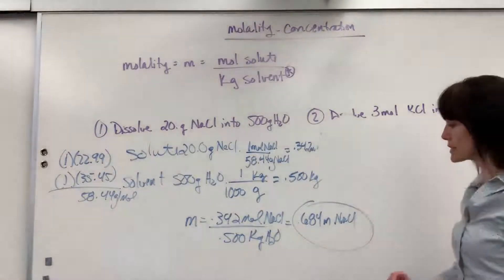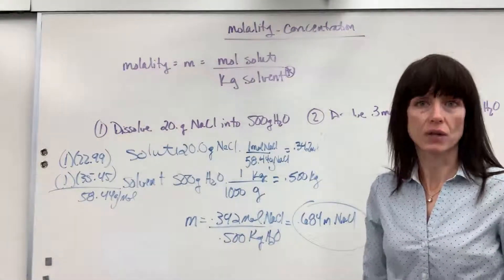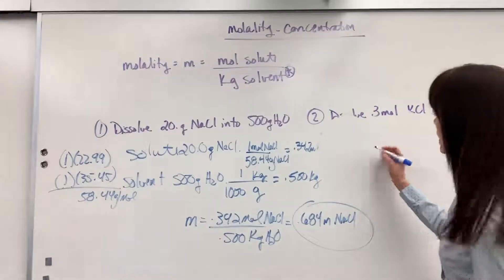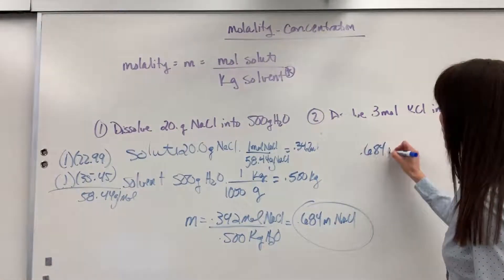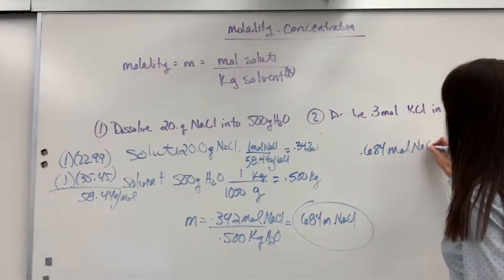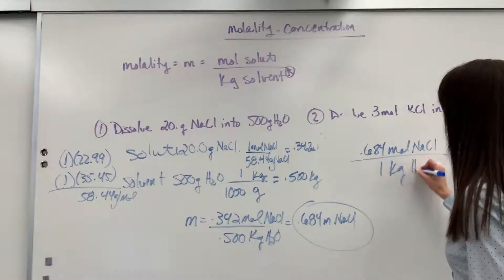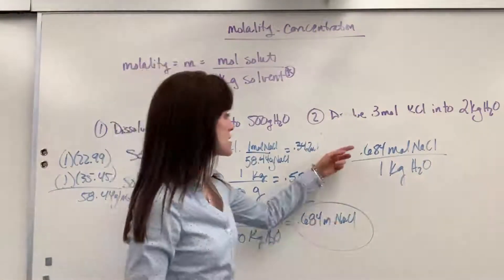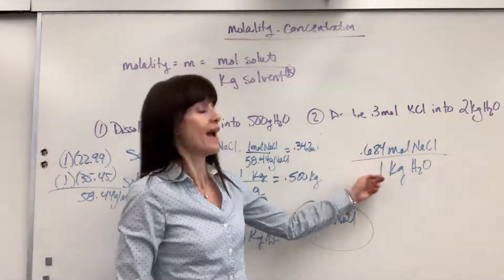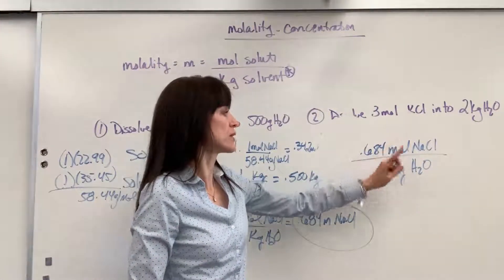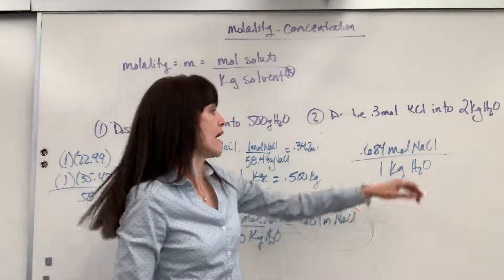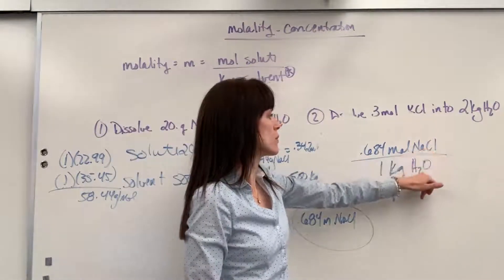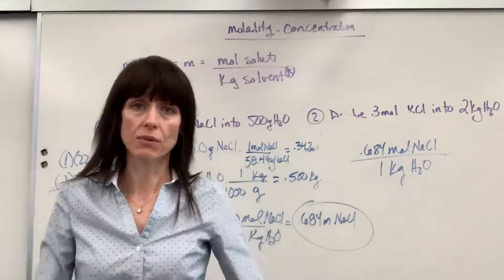If I'm given 0.684 molal sodium chloride, this is really what it is. It is 0.684 moles sodium chloride for every one kilogram of water. There you have it. So it's this number, understood to be over a 1, and it's moles for your numerator, kilogram for the denominator, and then it's whatever your solute is and whatever your solvent is. So rewrite that.